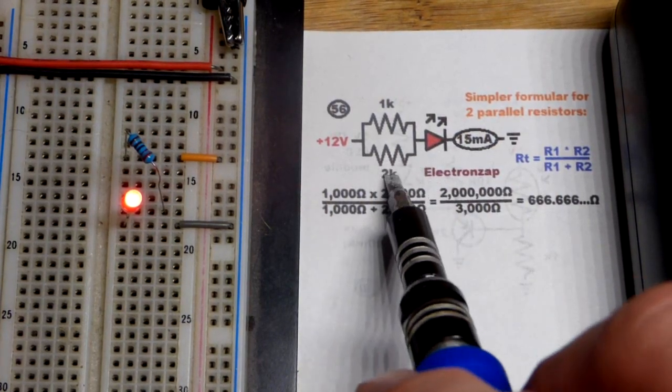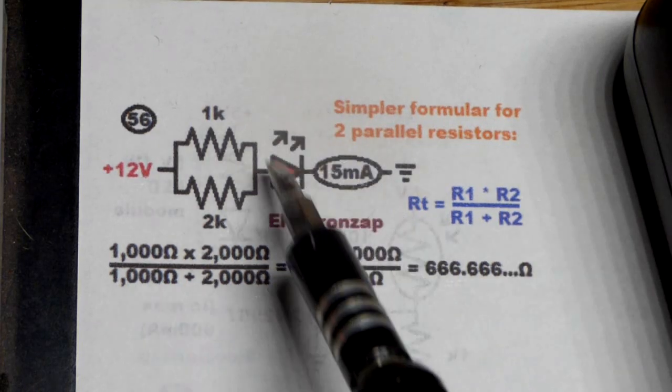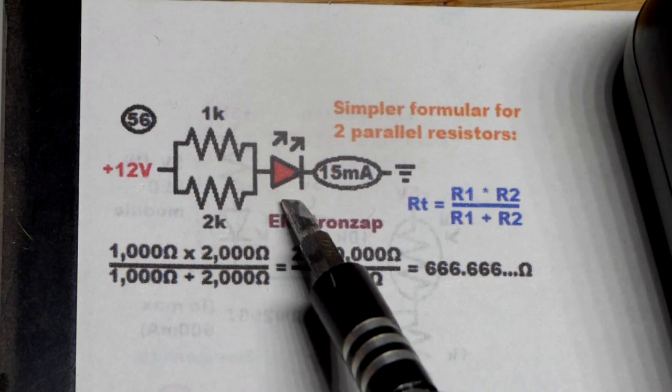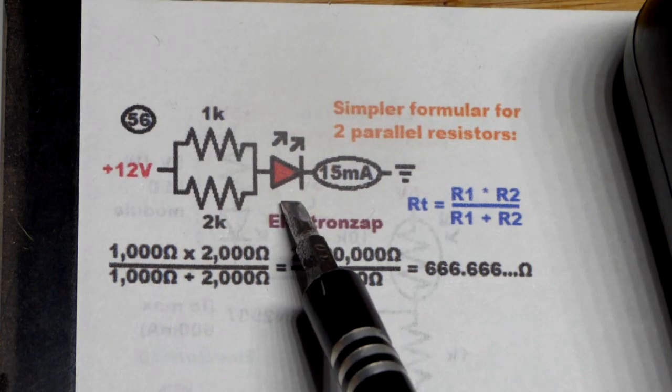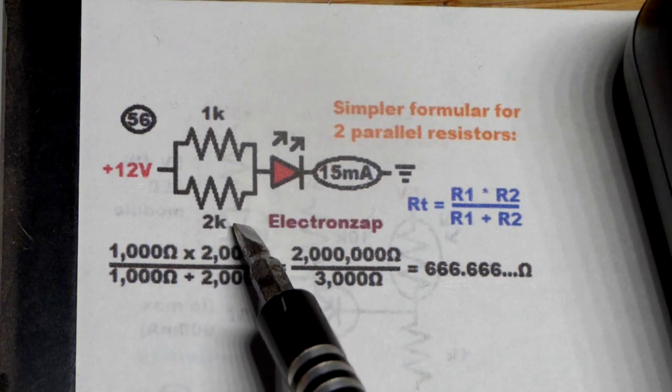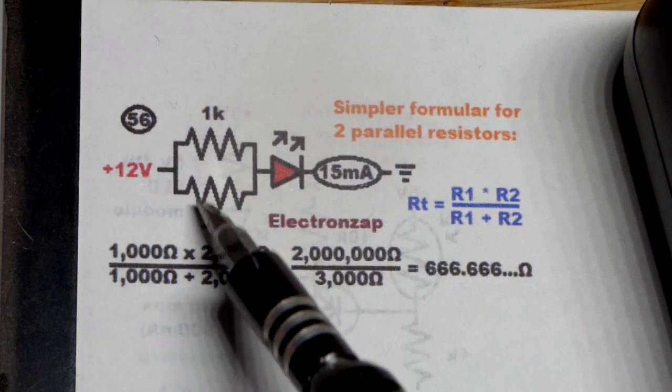Again, I used a lower value on here to make the math simpler. So now, zooming in on the schematic diagram. I'm pretty sure I just did simple calculations when I drew it together. But here is the formula. When you have two resistors, you cannot use this if you have three or more parallel resistors. Only two.